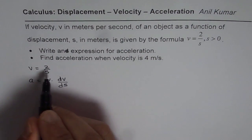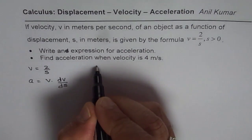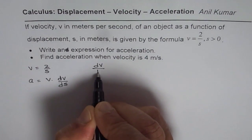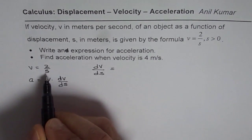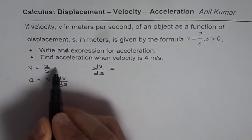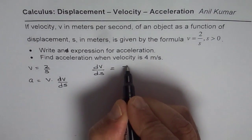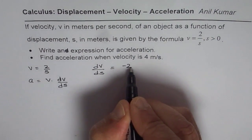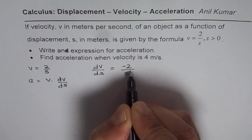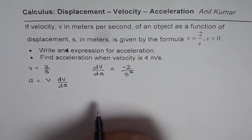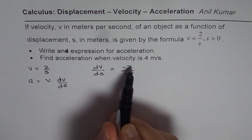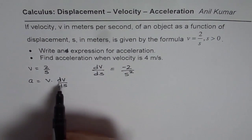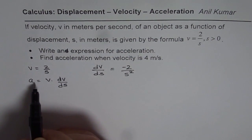From here, we can say dv/ds equals — it is 2 over s, that is s to the power of minus 1 — which can be written as minus 2 over s squared. So that becomes dv/ds. We can substitute minus 2 over s squared for dv/ds to get the expression for acceleration.